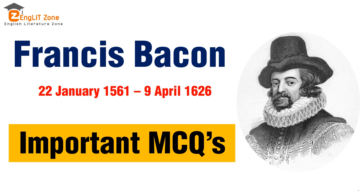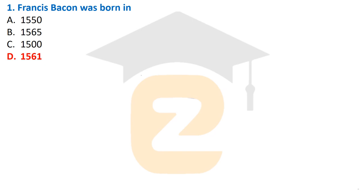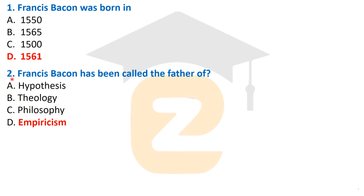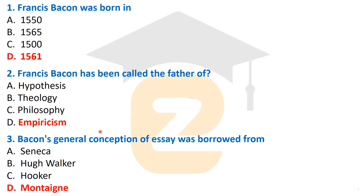Francis Bacon was born on January 22, 1561, and he died on 9th April 1626. In English literature, Francis Bacon is famous for his scientific methods. He is called the father of Empiricism — the theory that knowledge comes primarily from sensory experience, meaning sensory experience is the primary source of knowledge.